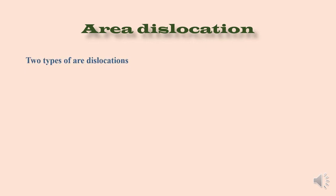Two are very common area dislocations. One is called twin and the another is called grain boundary.